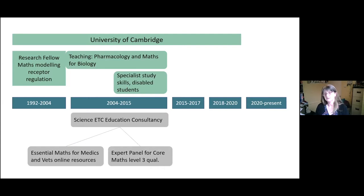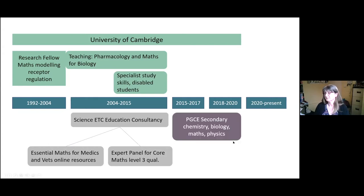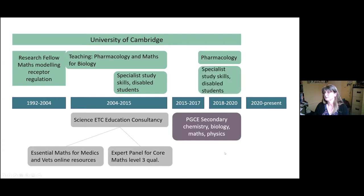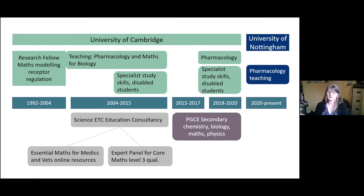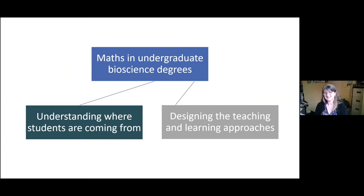I was also on the expert panel for the Core Maths Level 3 qualification. This is a really useful qualification to highlight to students thinking about bioscience degrees — it's an alternative to A-level maths and does a lot of things we'd really like our biology students to have done. It's all about applying GCSE maths ideas into other subjects. I then did a PGCE in secondary chemistry, taught a lot of maths, and in the last couple of years taught entirely online for students with mental health issues. I'm now at the University of Nottingham, having just completed a full year of pharmacology teaching for the graduate entry medicine programme.